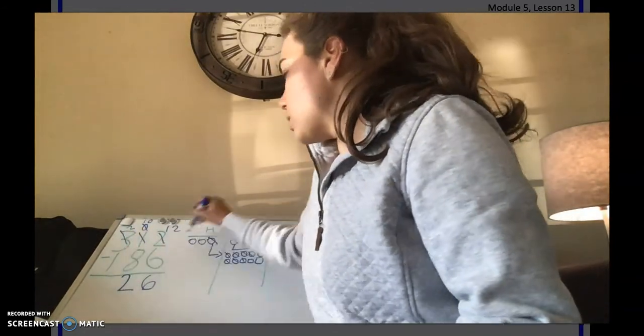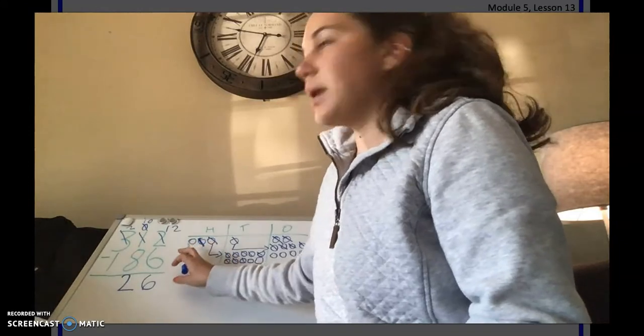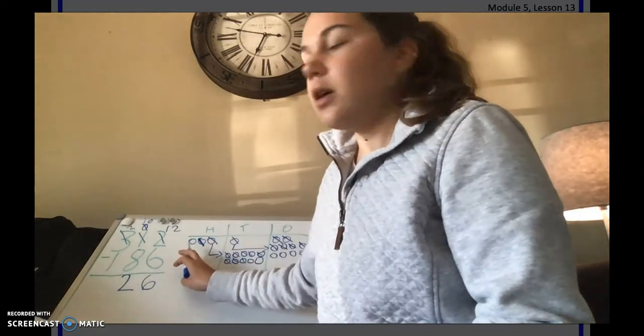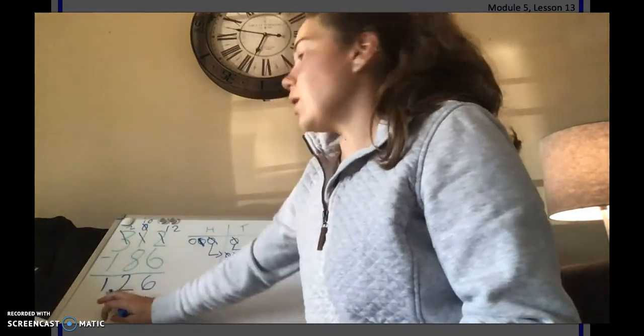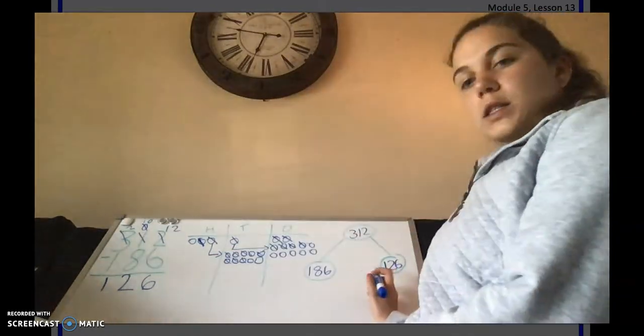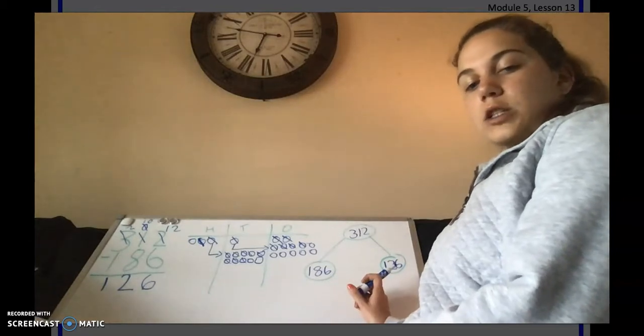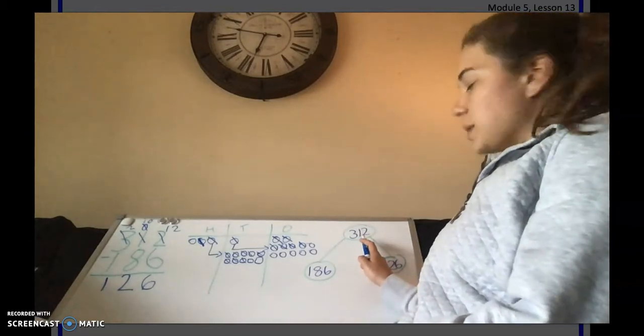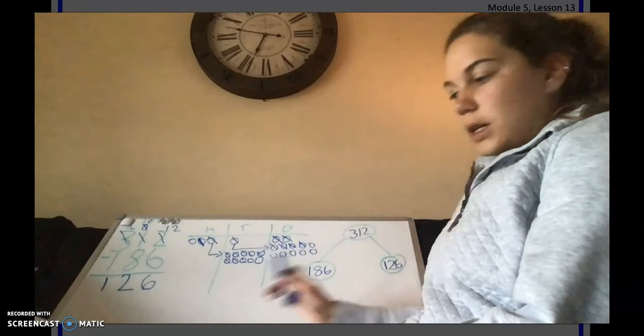And now we can do 2 minus 1 for our hundreds. How many hundreds do we have left? Good, we have 1. So we have 126. So our two parts are 186 and 126, and they come together to make our whole of 312.